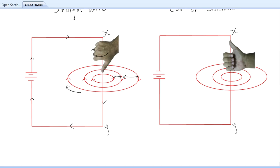What happens if you reverse the battery? The current now goes from Y to X, so it's upwards. You point your thumb upwards and find that your fingers curl anticlockwise, so the arrows are in the opposite direction.